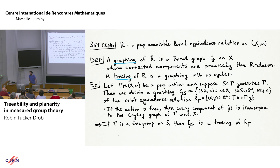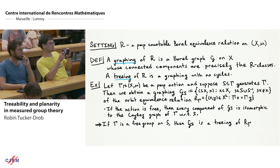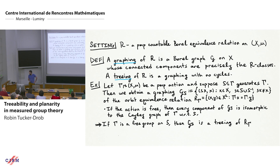The setting I'll be working in: R will denote a probability measure preserving countable Borel equivalence relation on the standard probability space (X, μ). Throughout the slides I'll always say PMP, but in fact everywhere except for one place — which I will point out — we actually won't need to use the PMP assumption for the main results.